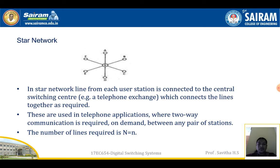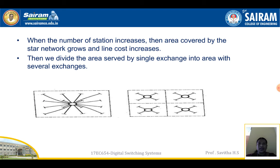Star networks are used in telephone applications where two-way communication is required on demand between any pair of stations. The number of lines required is equal to N. When the number of stations increases, the area covered by the star network grows and the line cost increases.